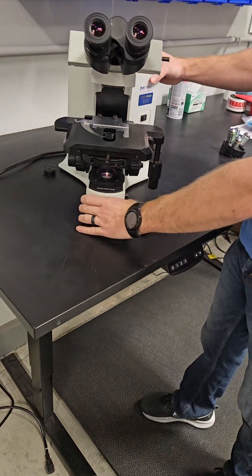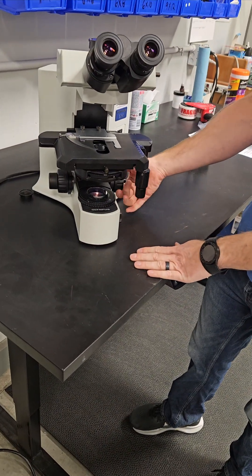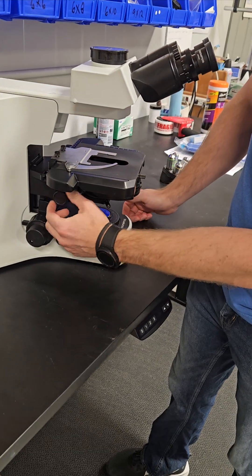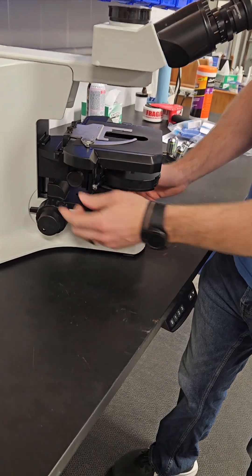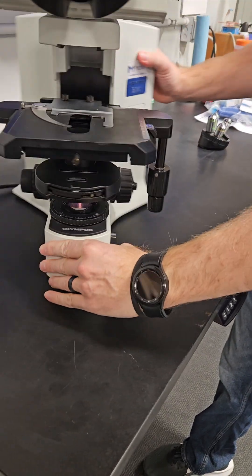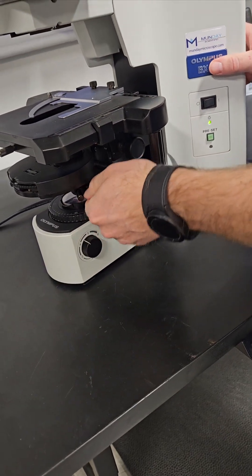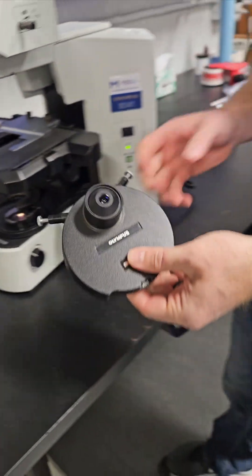We're going to set that aside, and then I'm going to take the condenser out by raising the stage, lowering the condenser with the substage. There's a screw right here that we're going to loosen. That condenser is going to slide right out.